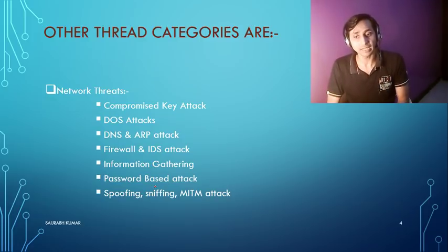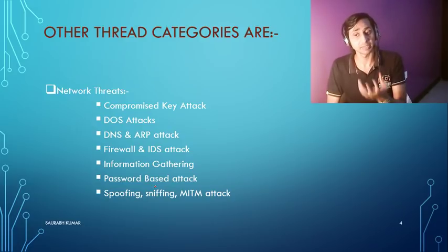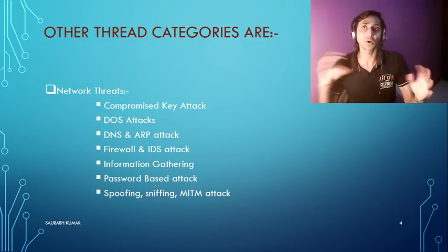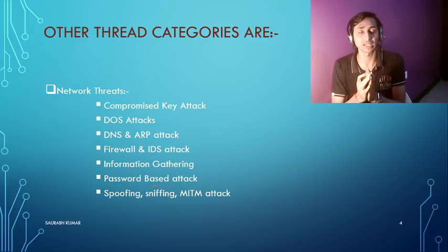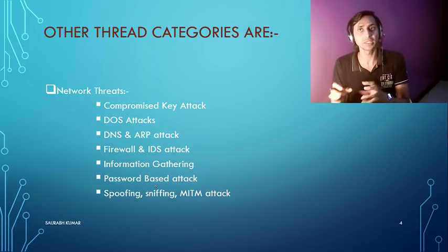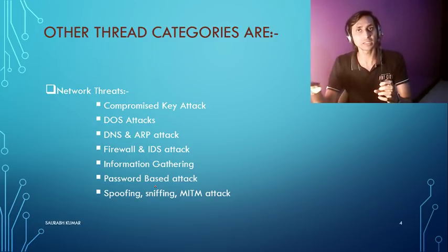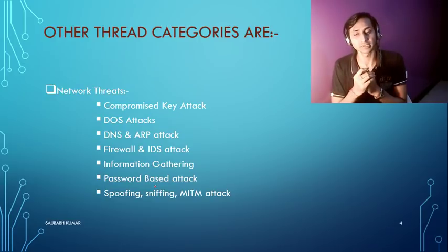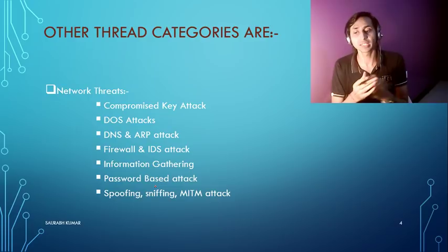Other network threats include DNS and ARP attacks, firewall or IDS attacks, and information gathering — where an attacker uses tools to capture your entire network topology, which devices are connected, their IP addresses, and how they are interconnected. Attackers can also perform spoofing, sniffing, or man-in-the-middle attacks on the network.